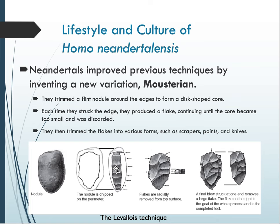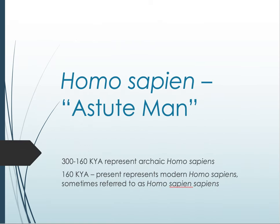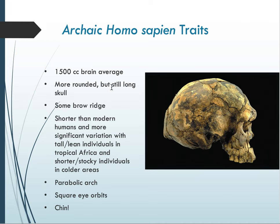The Levallois technique is the first time in human history where you can predetermine the shape and size of a tool. However, it's a complex technique that takes a long time. What Homo sapiens were doing at the same time was developing technology that is much less time-consuming and more efficient. We meet ourselves: Homo sapiens, or 'astute man.' We appear in the fossil record as early as 300,000 years ago, with the first 150,000 years represented by archaic Homo sapiens who still retain some primitive traits.